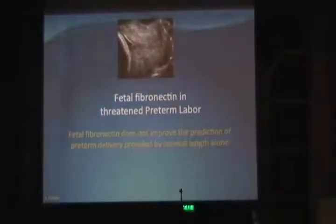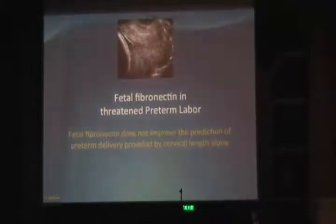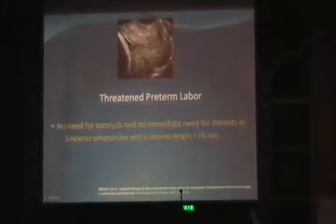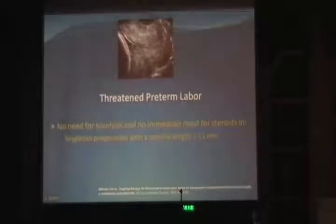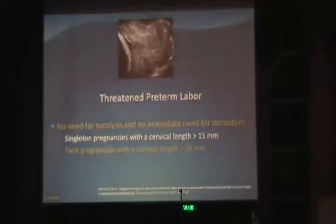Regarding fetal fibronectin, its presence in cervicovaginal secretions is useful in distinguishing between true and false preterm labor, but it does not really improve the prediction of delivering within seven days beyond what is provided by the sonographic measurement of cervical length alone. So women with a single fetus in threatened preterm labor with cervical length more than 15 mm do not need tocolysis because they are in false labor. For twin pregnancies, the cutoff is 25 mm.